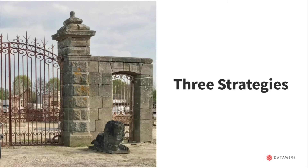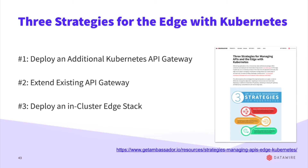There are three strategies we see when folks move to this cloud-native way of working and want to update how they work at the edge after adopting Kubernetes. First, deploy an additional Kubernetes API gateway — a new gateway in the cluster. Second, extend their existing API gateway solution. Third, deploy an in-cluster edge stack. We see a lot of greenfield projects going straight to strategy three, while heritage projects often start with one or two and migrate toward three. Each has pros and cons, which I'll walk through now.